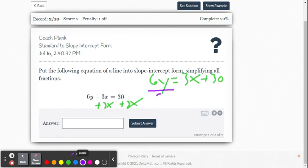Now we're going to divide both sides by 6 because we want 1y. So then we get y because 6 over 6 becomes 1. 1y equals 3 over 6x, which is going to be 1 half x. And then 30 divided by 6 is 5, so plus 5.